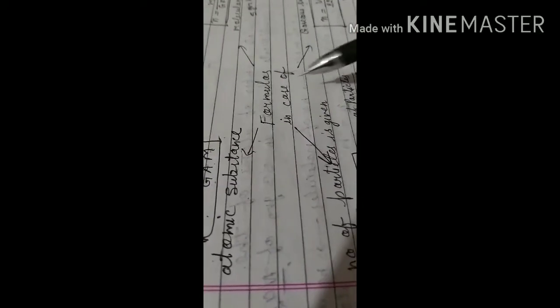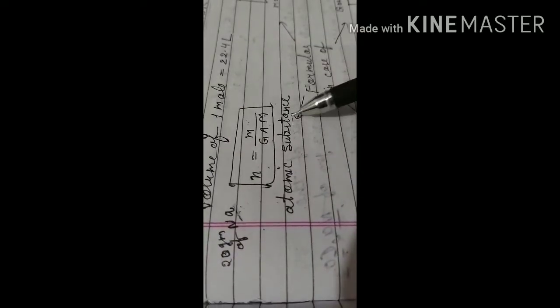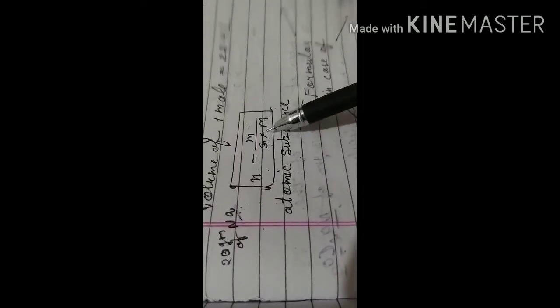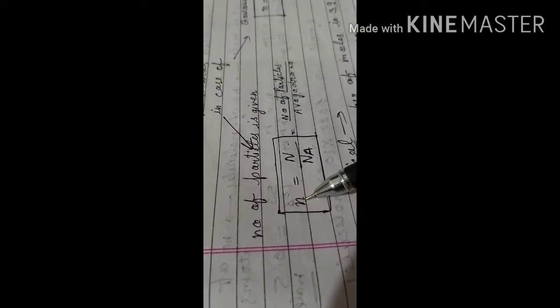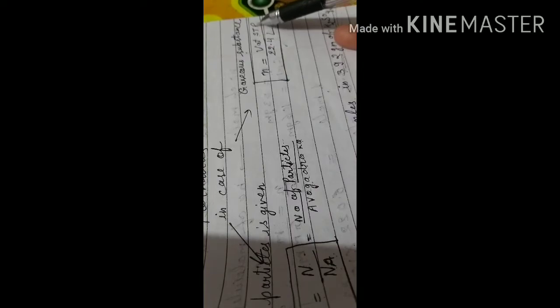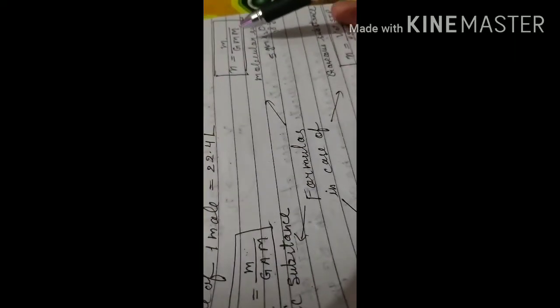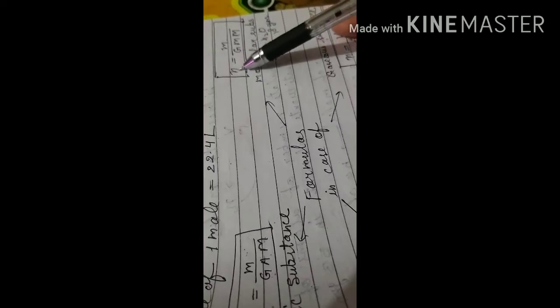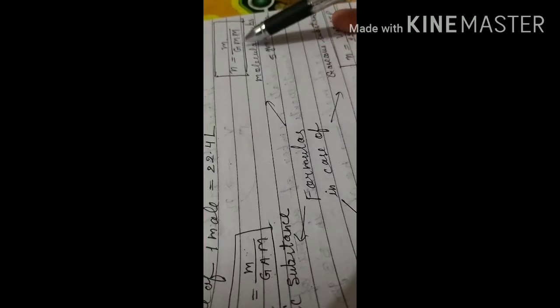Here is a formula chart: For atomic substances, n = m / GAM (gram atomic mass). For number of particles, n = number of particles / Avogadro's number. For gases, n = volume at STP / 22.4 liters. For molecular substances, n = m / GMM (gram molecular mass). Use these formulas to solve numerical problems.